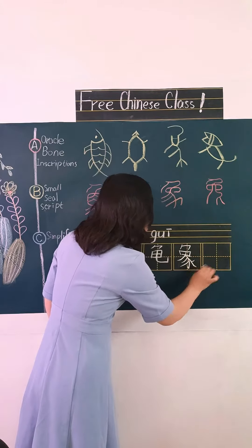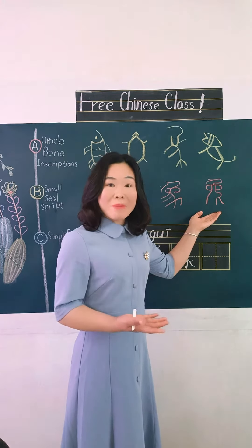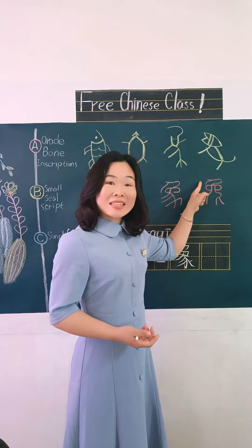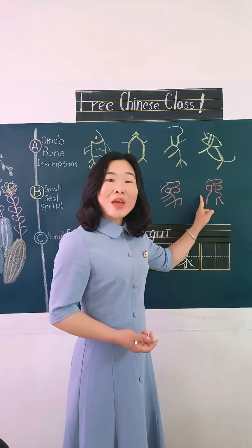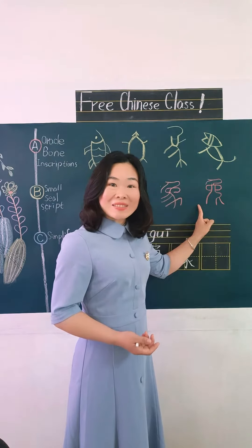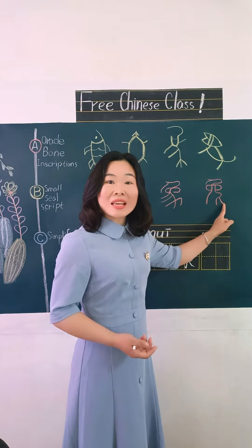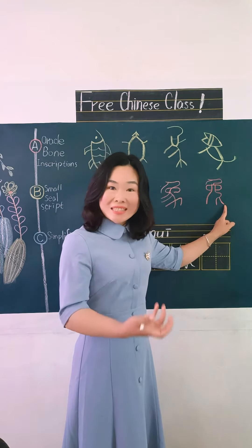Rabbit. Head, two eyes, front legs, behind legs, with a short tail.